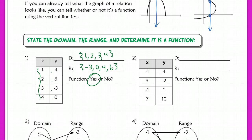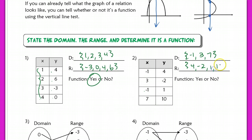In this next example, the domain has −1, 3, and 7 — negative 1 is repeated, so I don't rewrite it. The range is 4, −2, 1, and 10. Looking at this, the input −1 appears with two different outputs — like Tank having two separate birthdays — so this is not a function; it's only a relation.